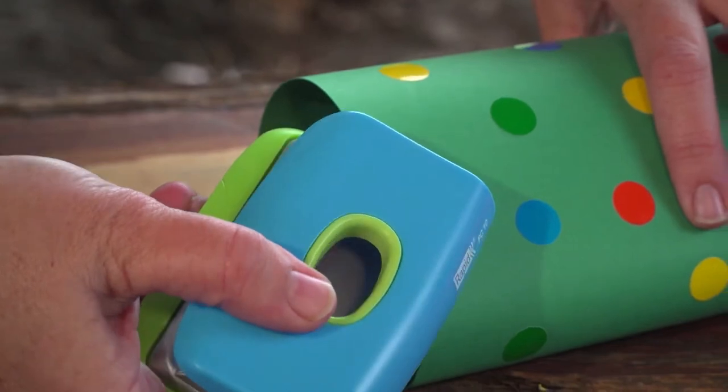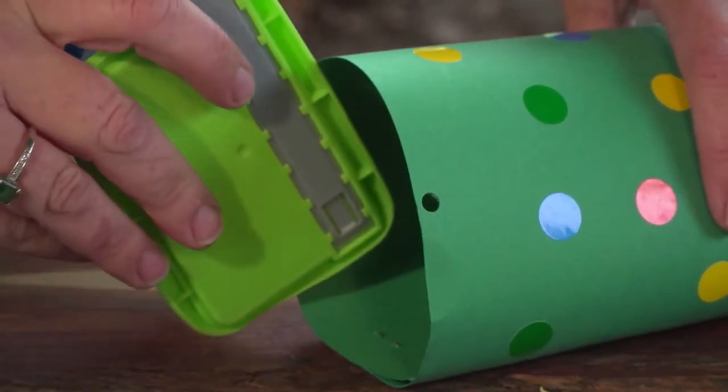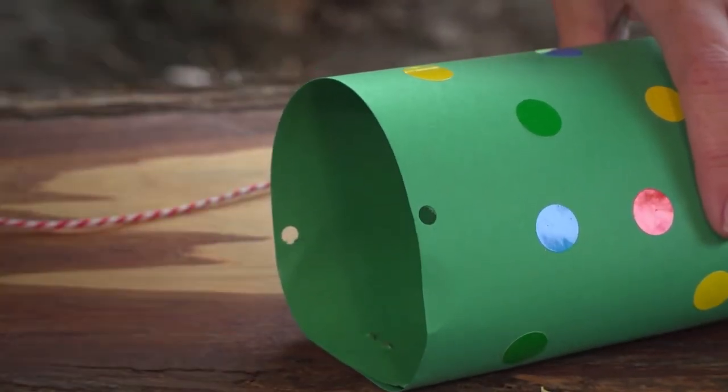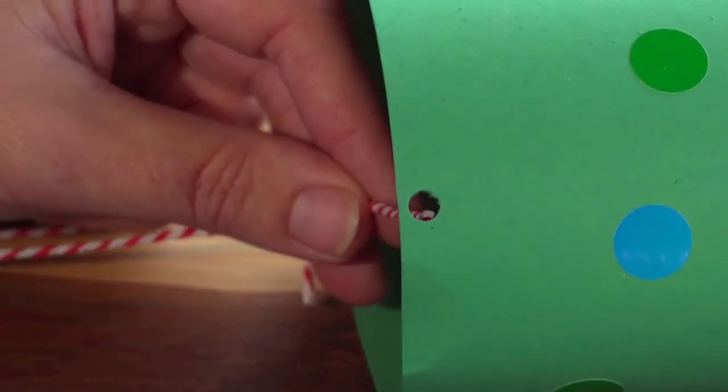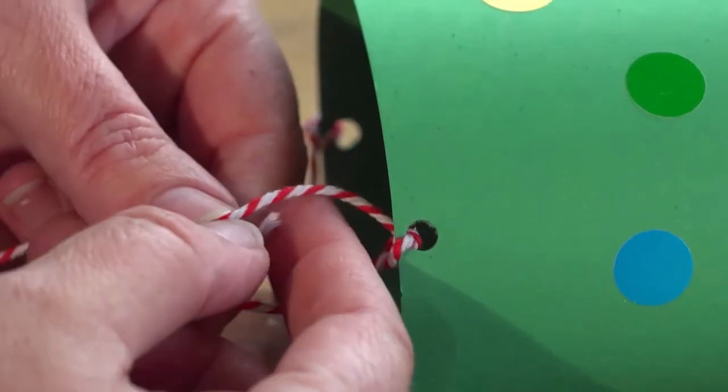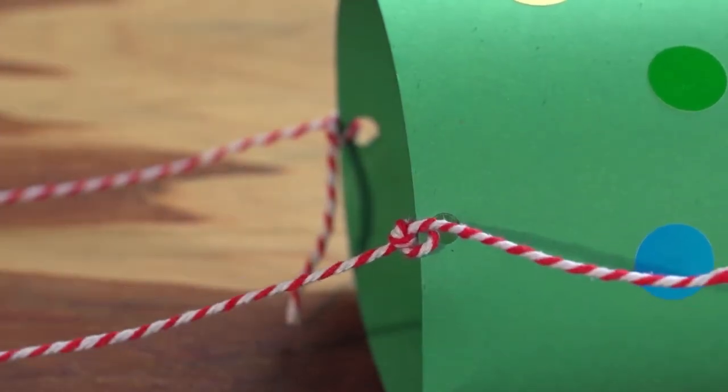At the other end of your paper make two holes on opposite sides with a hole punch. Then thread some string through both holes and tie each so you make a handle.